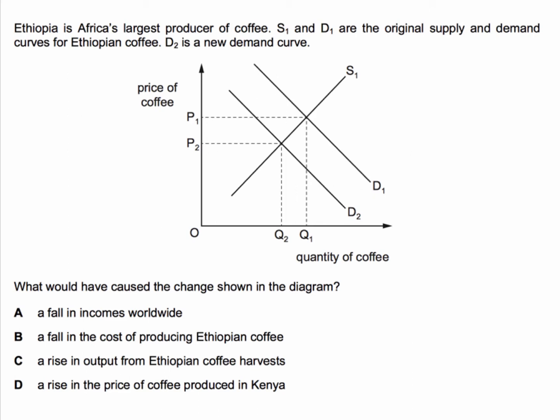What caused an inward shift of the demand for Ethiopian coffee? The answer is A — a fall in incomes worldwide. Assuming that Ethiopian coffee is a normal good, if world incomes are falling then the global demand for coffee is also likely to fall, causing the inward shift of the demand curve.